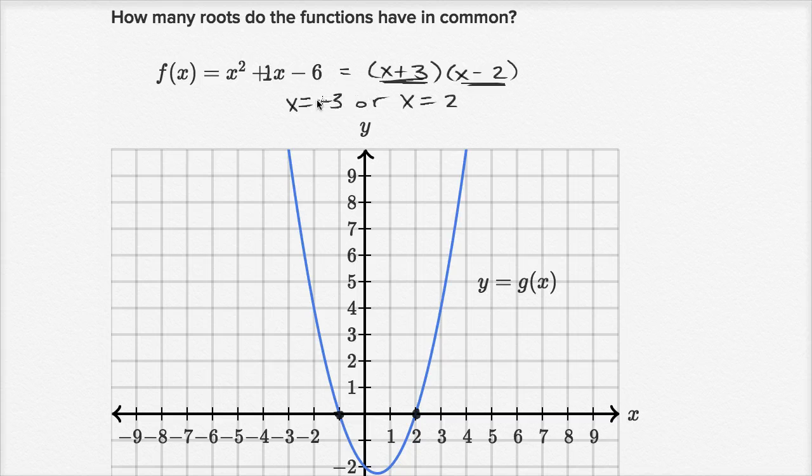So let's see, which of these are in common? Well, negative three is out here. That's not in common. X equals two is in common. So they only have one common zero, right over there. So how many roots do the functions have in common? One. All right.